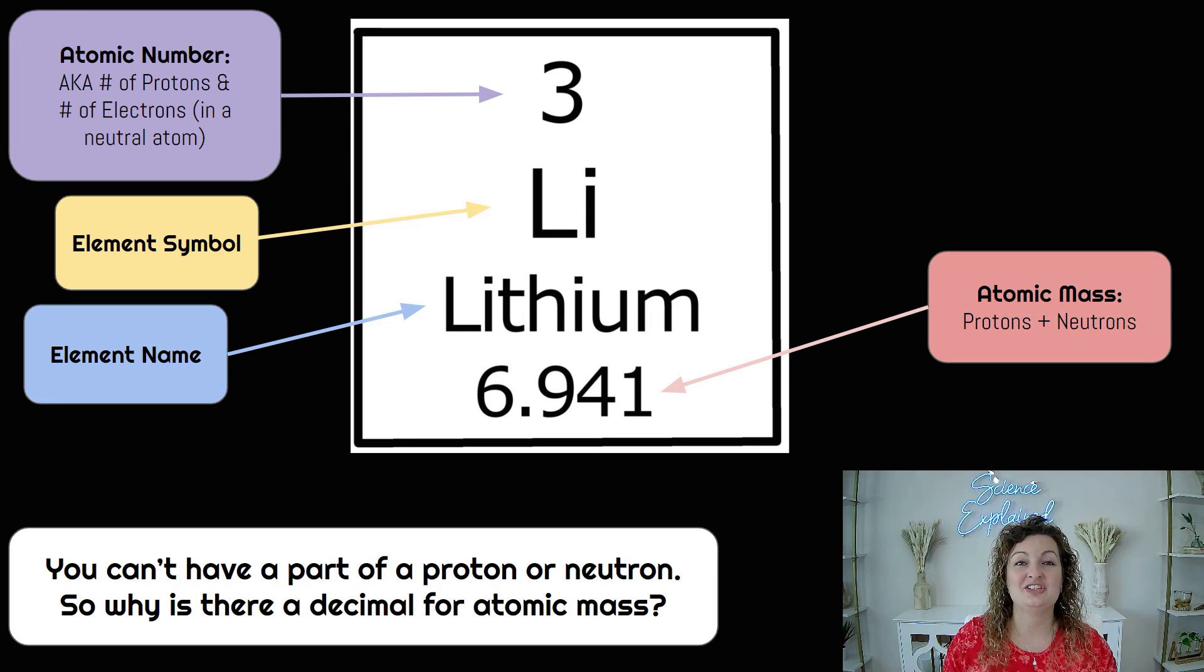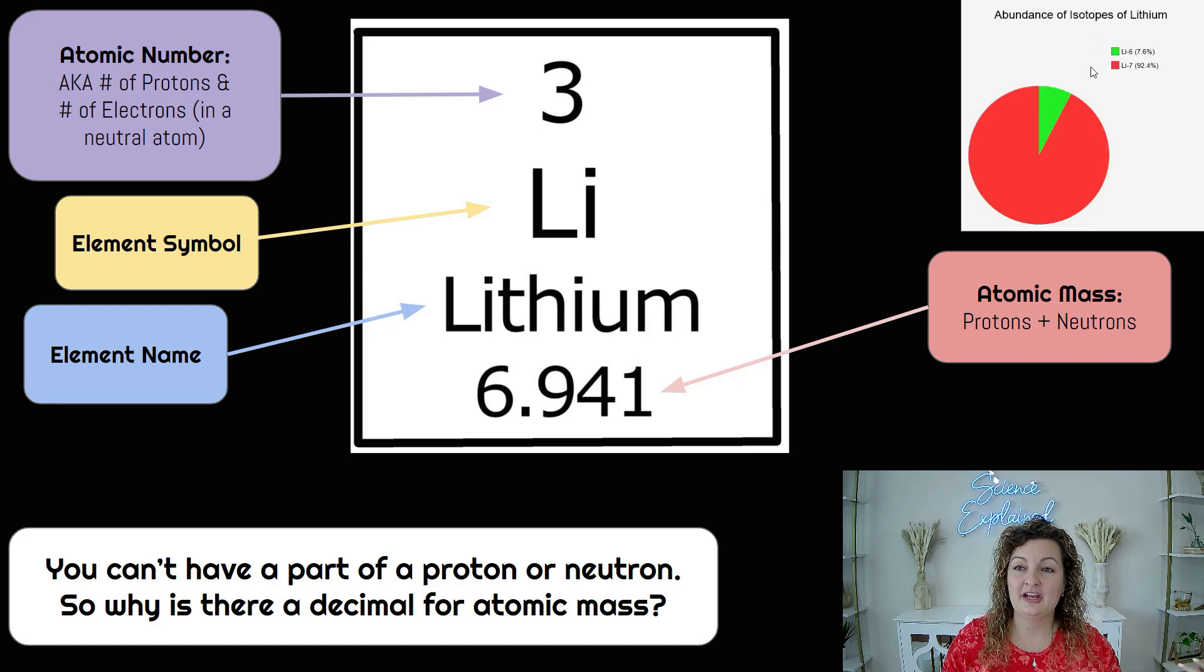We have lots of different variations of the elements that exist in our universe, and they're called isotopes of one another, and they happen at different percentages out there. So for example,